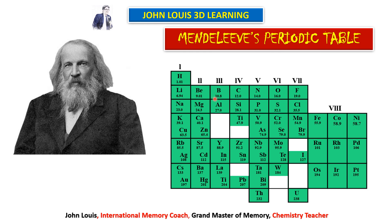Before those elements were discovered, he predicted their properties based on the properties of elements placed above them. He left many vacant spaces in the periodic table wherever he guessed more elements could be discovered later. All those elements were discovered exactly as he predicted, and they were all found to have similar properties with the elements already present in that group — that is why he is called the father of the modern periodic table.